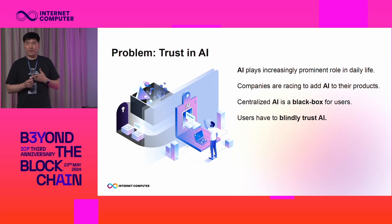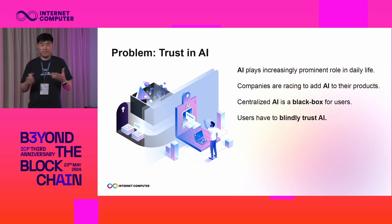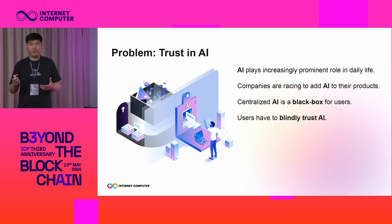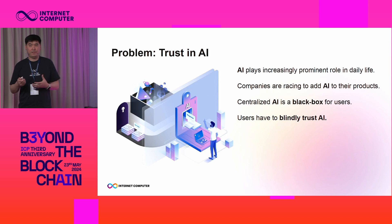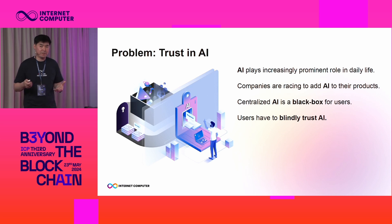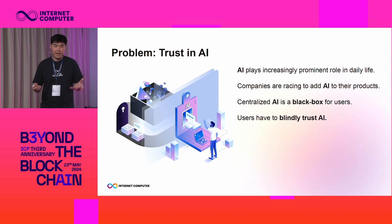If AI is running on centralized servers, then users have no visibility into how AI was trained, how it's using the user data, and how it's making decisions. So for users, this centralized AI looks like a black box, and they have to blindly trust that the AI is doing the right thing.